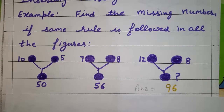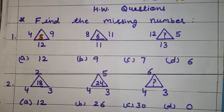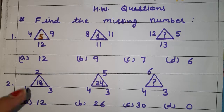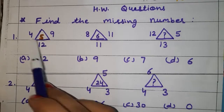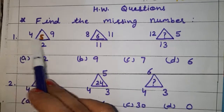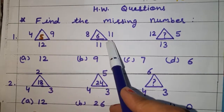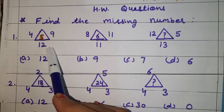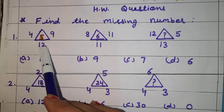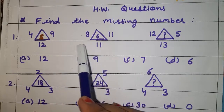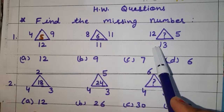Got it? In the same way you have to find out the missing number in these homework questions. In question number 1, two figures are given. We have to find the rule followed in the 1st and 2nd figures, and the same rule will be followed in the 3rd.